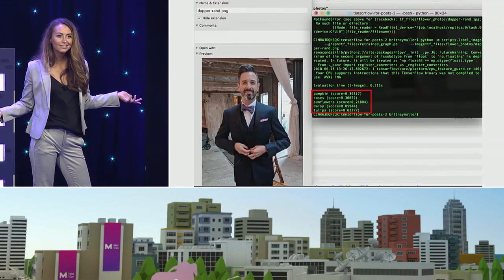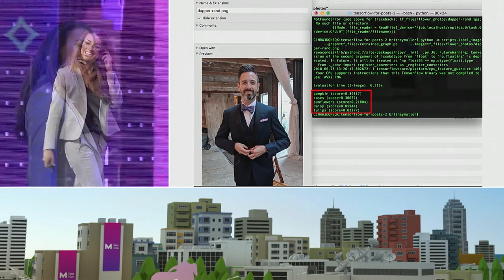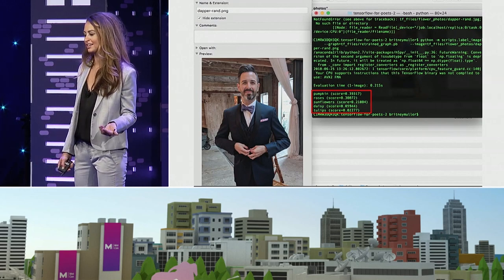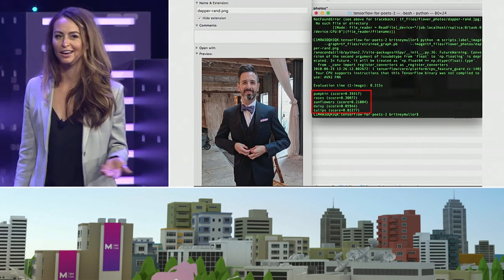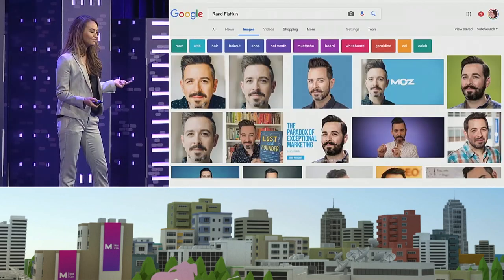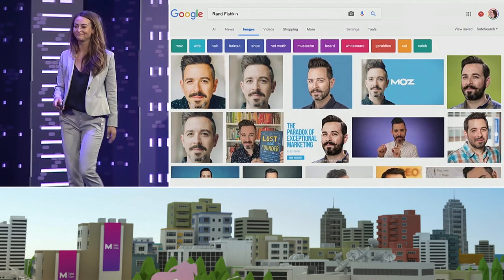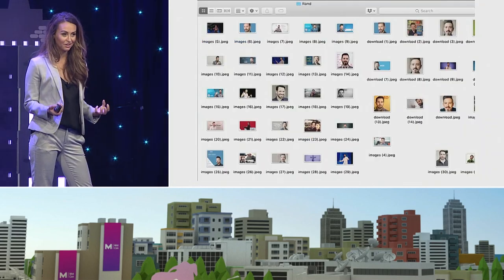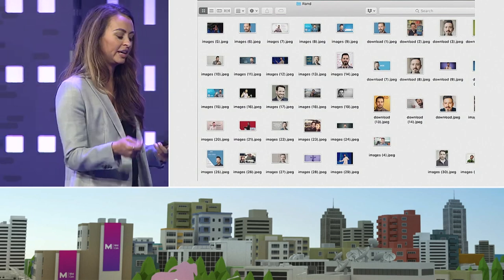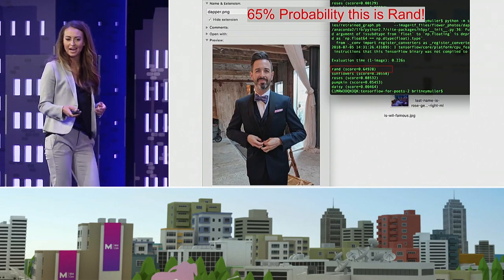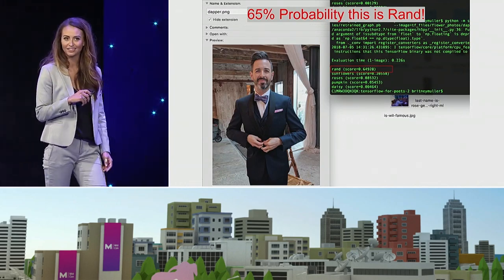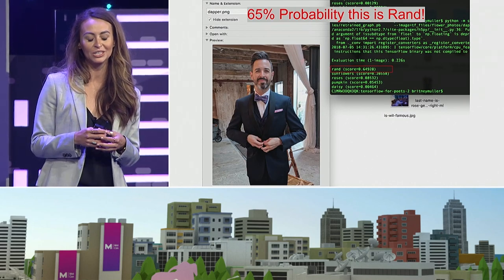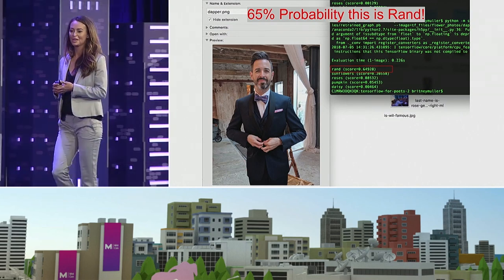What doesn't work so well is if I feed it a picture of Rand Fishkin — it thinks Rand is Pumpkin. But wouldn't it be cool if this could also recognize people? So I went on Google, searched for Rand Fishkin, found all these pictures, used the ImageSpark Chrome plug-in, selected about 150 photos of Rand, bulk downloaded them into a folder called Rand, retrained the model, and now it thinks within 65% probability that is Rand. That's the power of machine learning — just 150 photos.